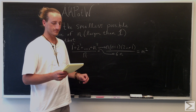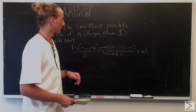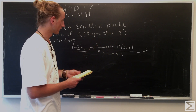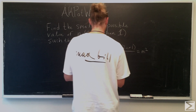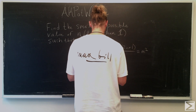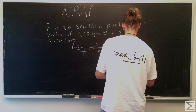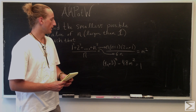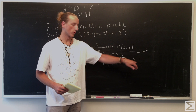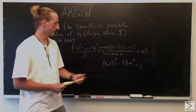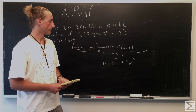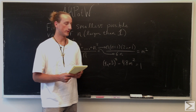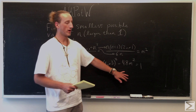Looking at this, we can multiply through and simplify. After we multiply through and simplify, we want this to give us a 1 on the right side of this new equation, just so we can look for the squares more easily. This is called Pell's Equation.